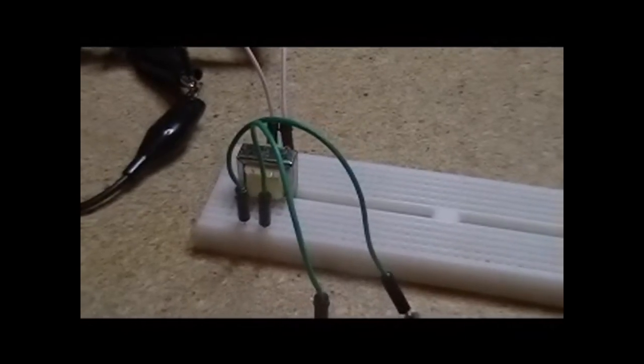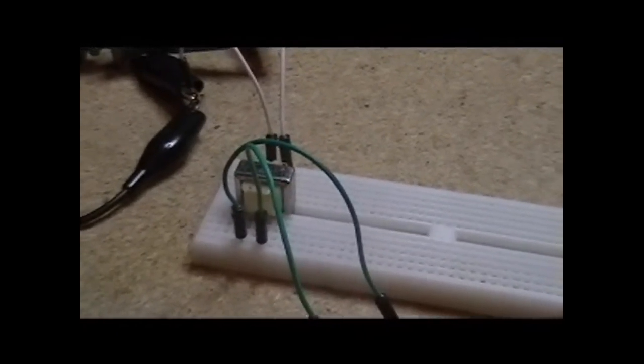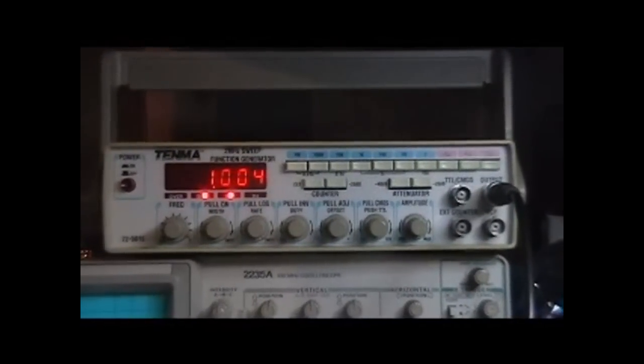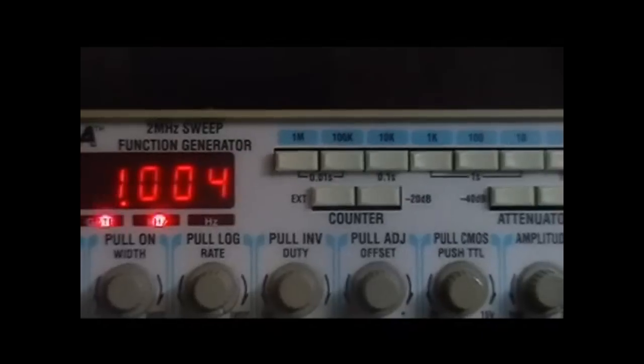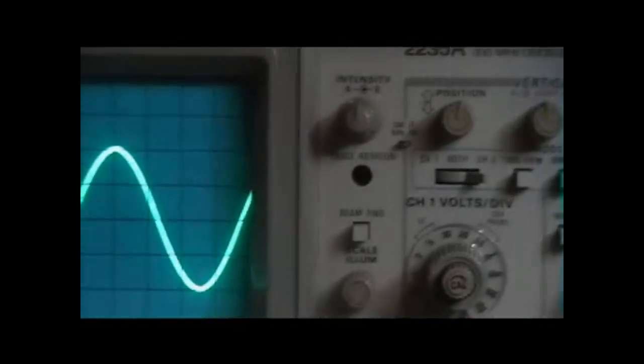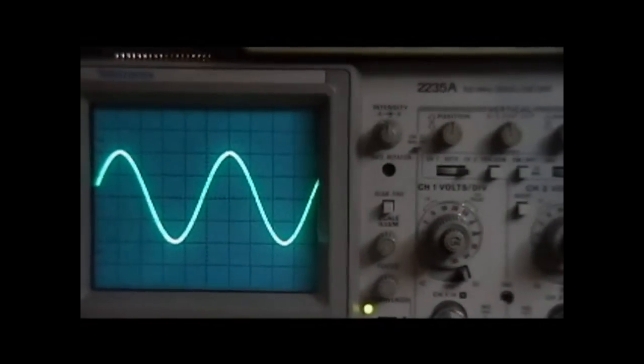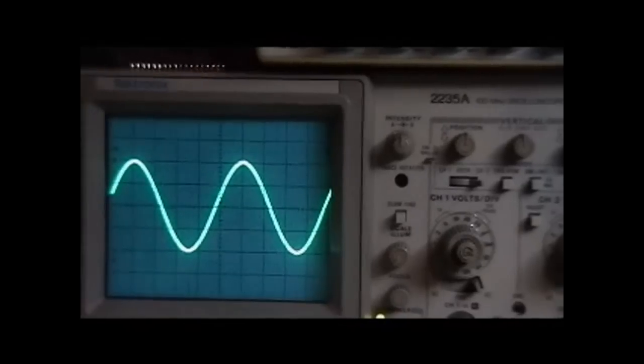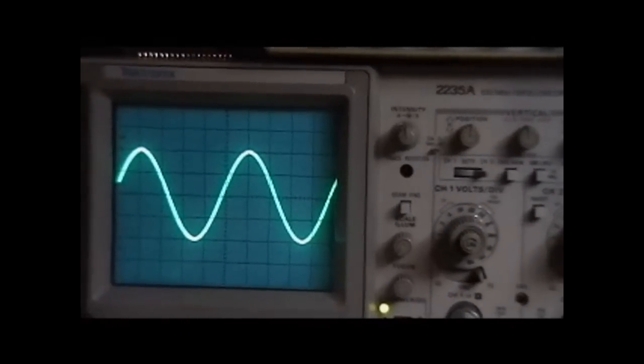But anyway, to start, what I've got is here is a transformer. And if we look, I'm running the signal in through a function generator. We're putting in approximately 1 kilohertz. At right now, if I look at the wave on that, we're putting in about, the voltage divisions on this are about 5 volts. So we're putting in about 20 volts peak to peak into this transformer.